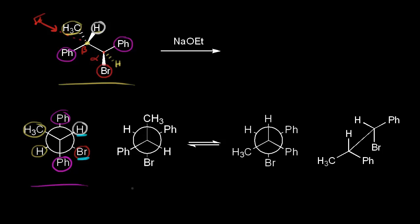Drawing a line through the methyl group and the bromine helps visualize the relationship: here is the methyl group and here is the bromine. This is the same Newman projection, just rotated a little to the right. The hydrogen in white and the phenyl group are on the front carbon; the hydrogen in yellow and the other phenyl group are on the back carbon. Notice the phenyl groups are still anti to each other.